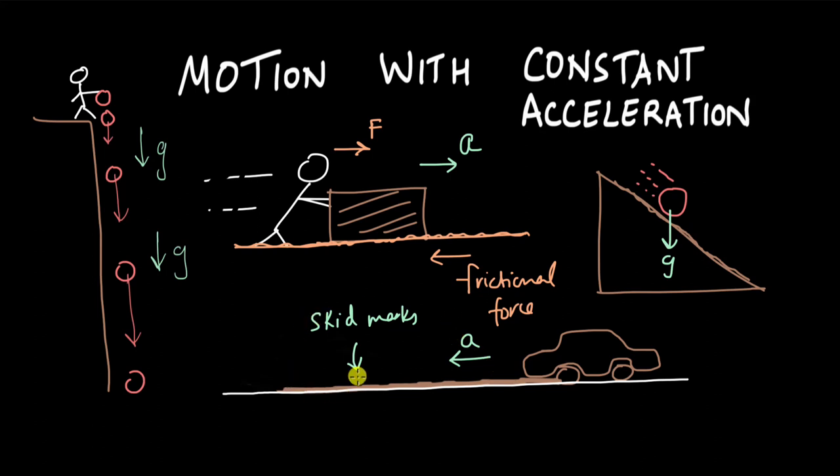There will be many more cases where acceleration is constant and velocity could be increasing or decreasing, depending on whether the acceleration is in the same direction as the velocity vector or in the opposite direction. We will analyze such cases and come up with kinematic equations that help us predict many variables associated with the motion of an object.